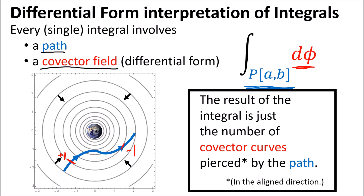The fundamental theorem of calculus tells us that the value of this integral only depends on the value of phi at the endpoints of the path a and b. Geometrically, this means the result doesn't depend on the particular path taken, as long as the endpoints are the same. So this is our new interpretation of integrals — let's go through a couple of examples to compare it with the old interpretation involving areas under curves.